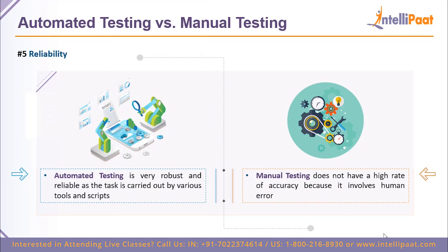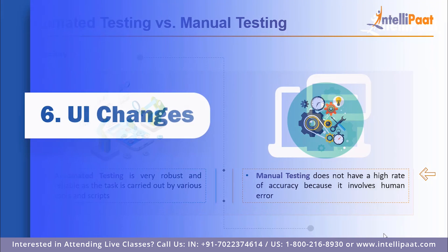Regarding reliability, automated testing is extremely robust and reliable — which is vital for any software testing methodology, as it uses a variety of tools and scripts. Manual testing does not have a high rate of accuracy because it involves human error, which cannot be avoided. So reliability is another win for automated testing.